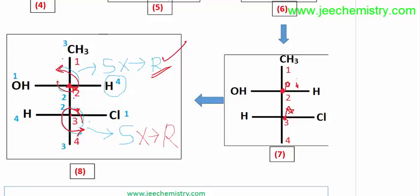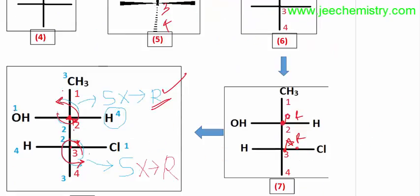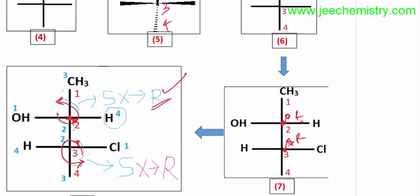This position gives R, R — both positions are R. But in the Wedge-Dash position formula, the configuration is R and S: the second carbon is R and the third carbon is S. However, what we are getting here is R and R — the second carbon is R and the third carbon is R. But in the Wedge-Dash position formula, the third carbon is actually S. So we need to change the structure.